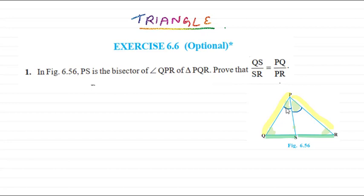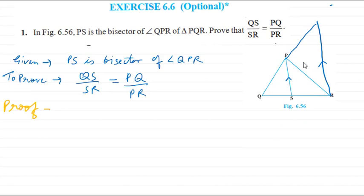We need to do some construction. What I'm doing here is constructing another line parallel to PS. Drawing this line from the end point and extending it, I'm naming it T. So TR has been constructed parallel to PS.